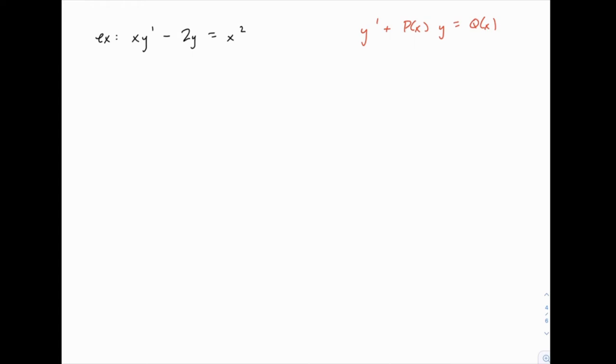The one thing we need to fix here is this x that's multiplied by y prime. We just need to divide every term by that, so we'll have y prime minus 2 over x times y equals x.